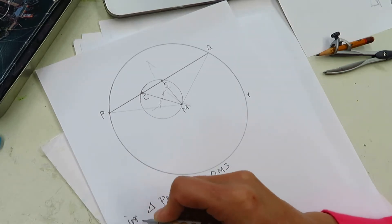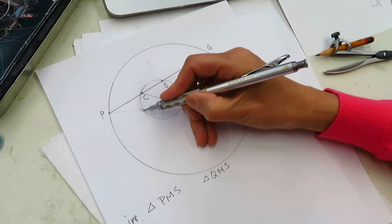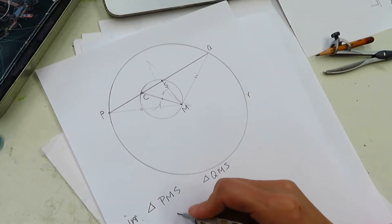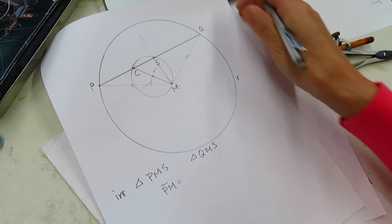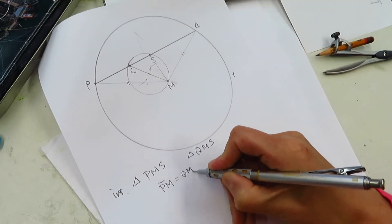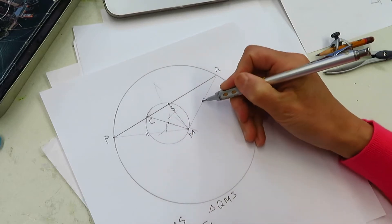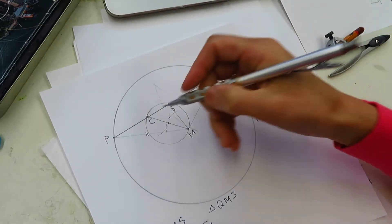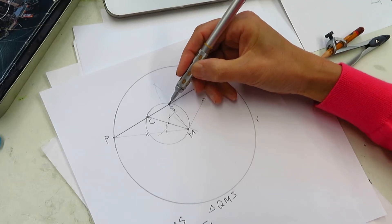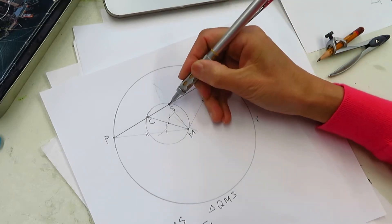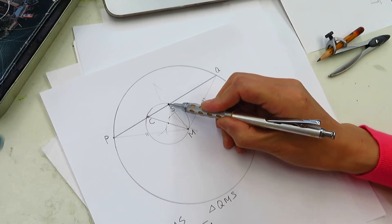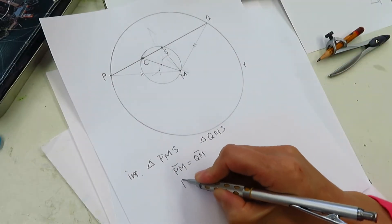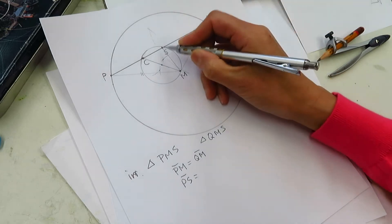In these two triangles, we know PM equal QM. Why? Because they are radius. By definition of the circle, the radius is the same. And another thing we know PS equal QS. Because we know S is the center of the line segment PQ. The second thing, PS equal QS.